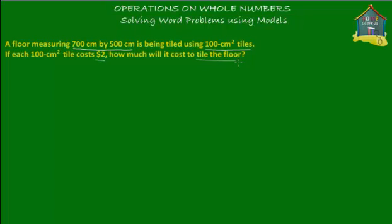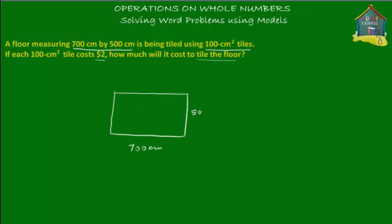This is an area question. What's given to us is a floor, and we can safely assume it's a rectangular floor because there are only two dimensions given — these can be the two sides of the rectangle. Most floors are rectangular, so it's safe to assume that. One side is 700 centimeters and the other side is 500 centimeters.